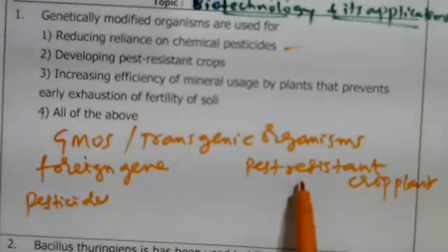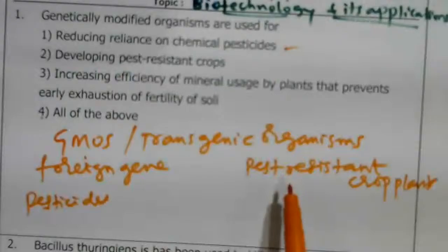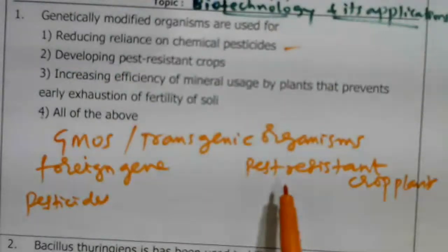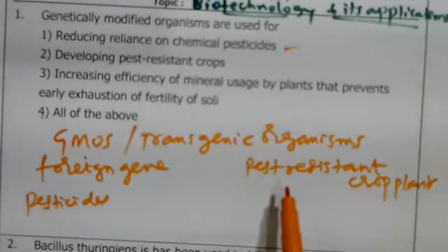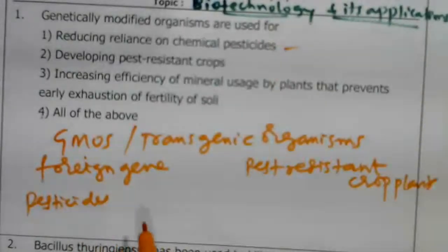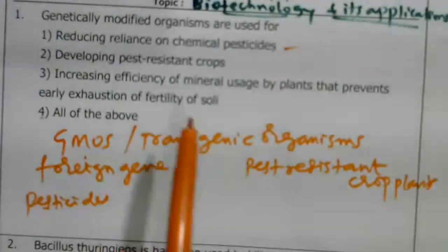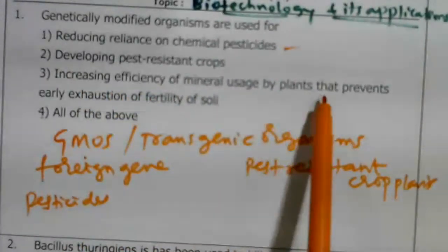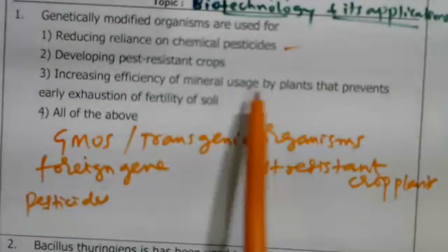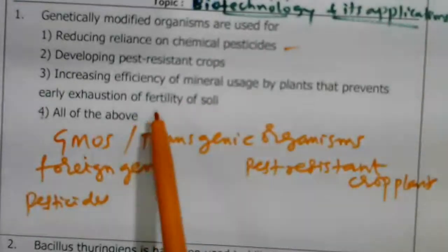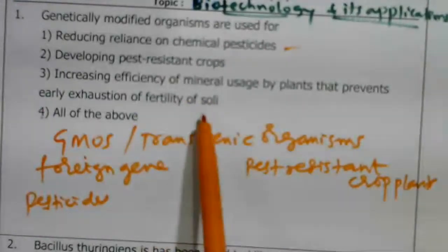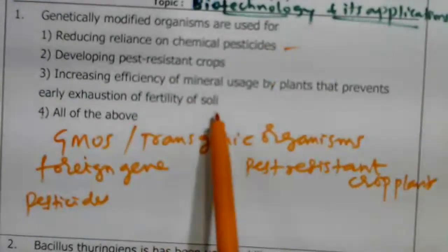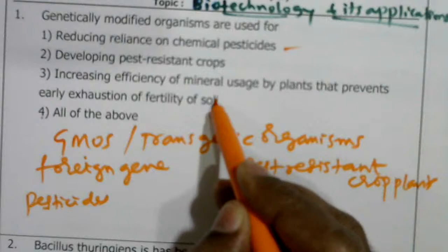Developing pest-resistant crops: we have to produce crops where common pests that can cause damage are minimized. Third point: increasing efficiency of mineral usage by plants, to prevent early exhaustion of soil fertility.